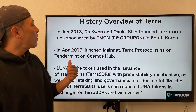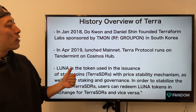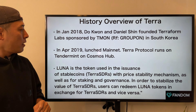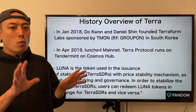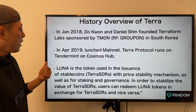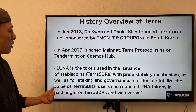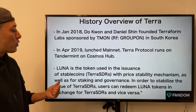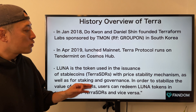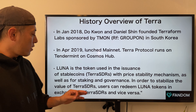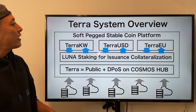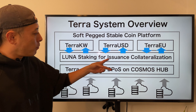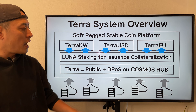Now let's move to the product analysis. Here is a history overview of Terra. In January 2018, Do Kwon and Daniel Shin founded Terraform Labs, sponsored by Timon — which is like a Groupon in South Korea. In April 2019 they launched their mainnet. The Terra protocol runs on its own blockchain — not on Ethereum or any other platform. LUNA is the token used for the issuance of stable coins, as a smart contract price stability mechanism, and also for staking and governance.